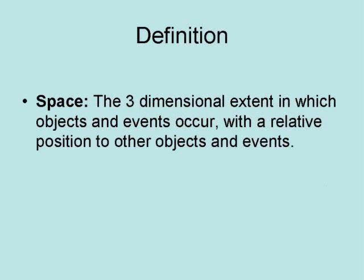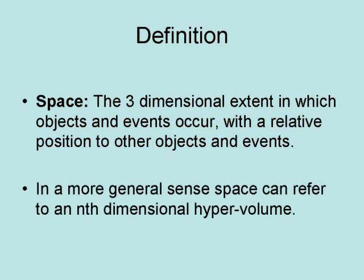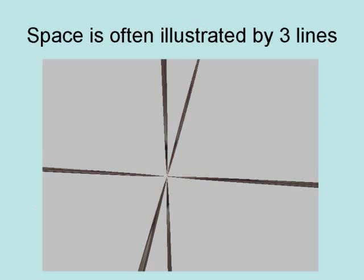Space is the three-dimensional extent in which objects and events occur with a relative position to other objects and events. In a more general sense, space can refer to an n-dimensional hypervolume. Space is often illustrated by three lines representing the three spatial dimensions. They are the axes of a three-dimensional graph. In 3D space, you can have objects all over, as shown here.